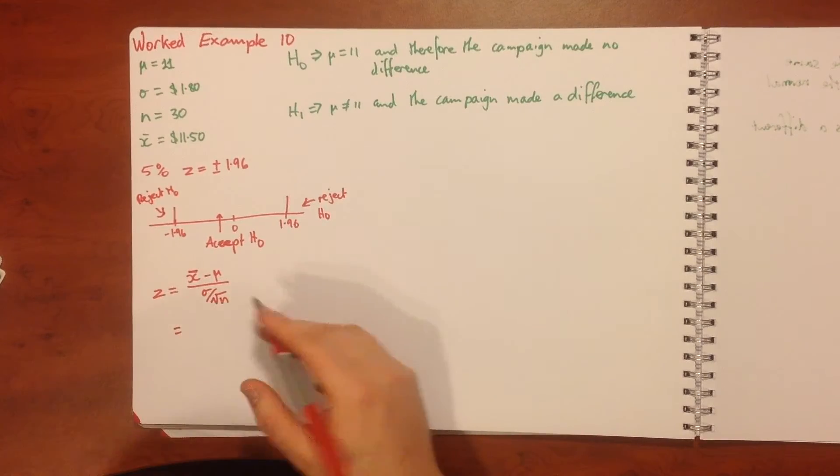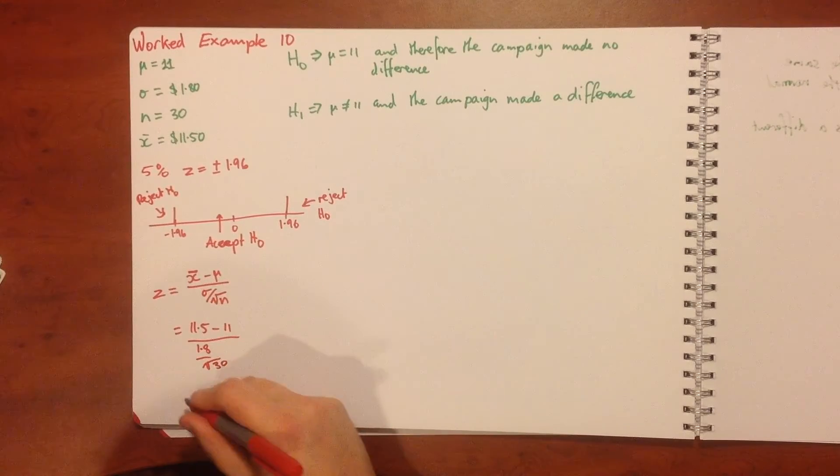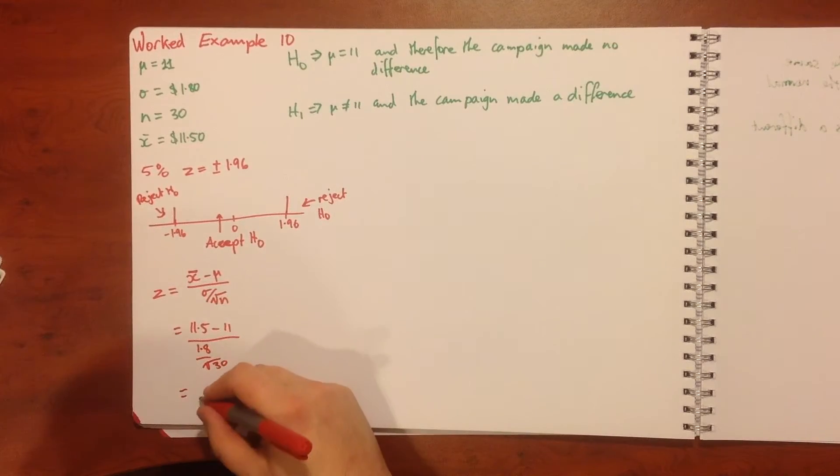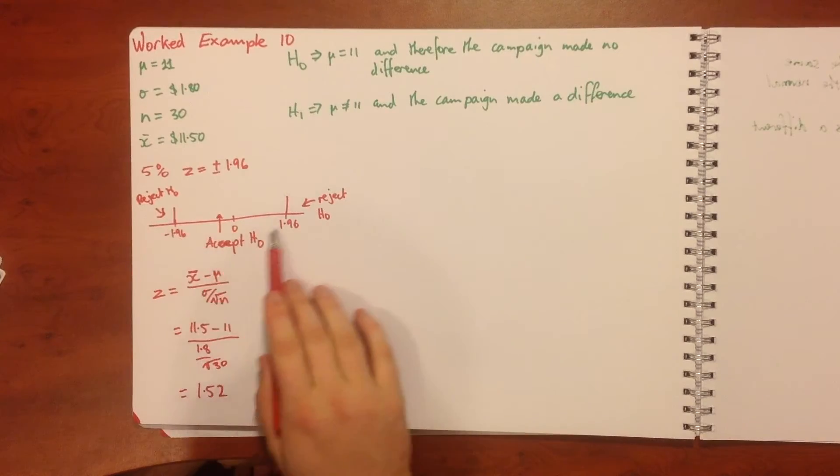Now our x̄ is our 11.5 minus our 11 over our standard deviation of 1.8 over our square root of 30. When we do that, then we get a value of 1.52. So 1.52 is within our range here.